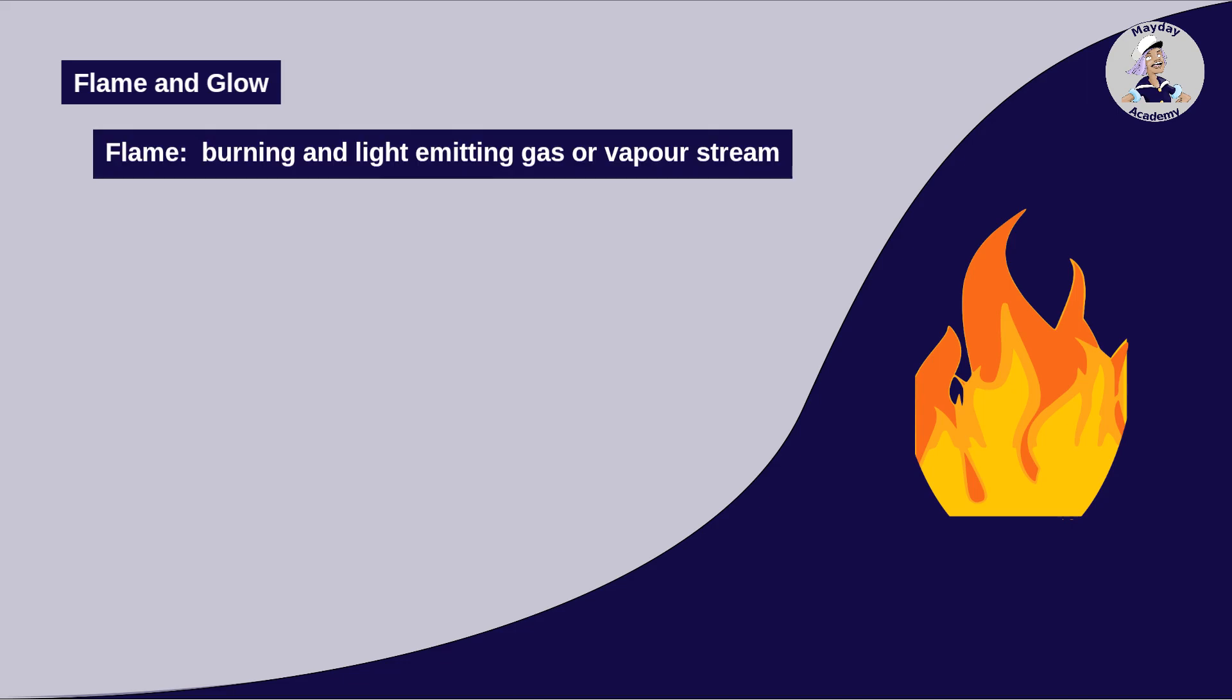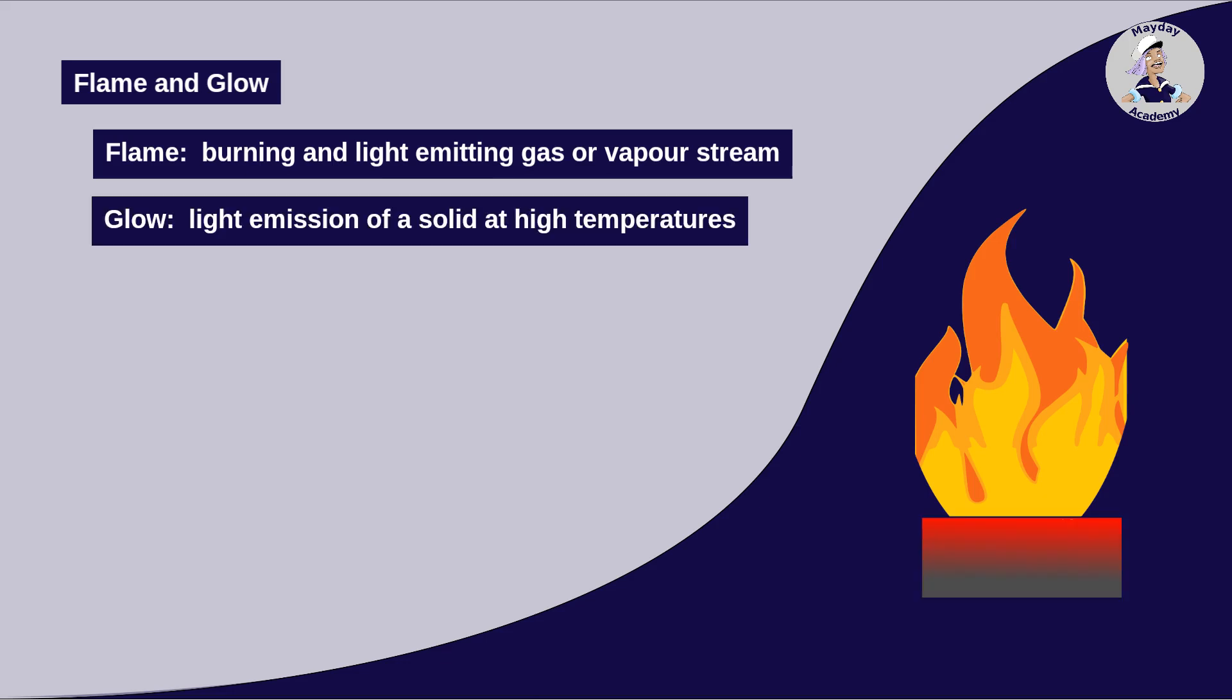We refer to the burning and light-emitting gas or vapor stream as a flame. With solid substances, there is also the phenomenon of glow. Glow is the light emission of a solid substance heated to a high temperature. Glow only occurs during the combustion of solid substances.